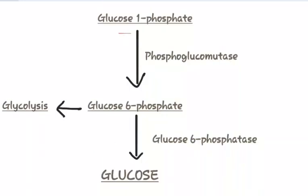Glucose 1-phosphate, in the presence of the enzyme phosphoglucomutase, gets converted into glucose 6-phosphate. This glucose 6-phosphate is further utilized in the glycolysis process.